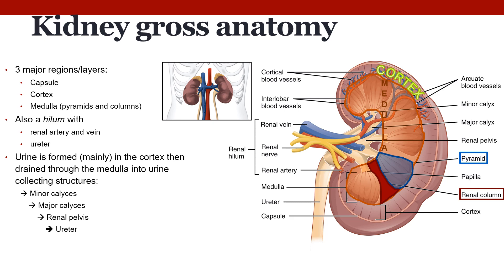The kidney consists of three layers, starting with the capsule, which is the outer layer. The next layer on the inside is called the cortex, which contains pretty much all the nephrons — the cortex is basically the main part where urine is formed. The medulla is the inner region of the kidney, containing the renal pyramids as well as the renal columns. The renal pyramids are cone-shaped tissues that contain the collecting ducts where urine goes.